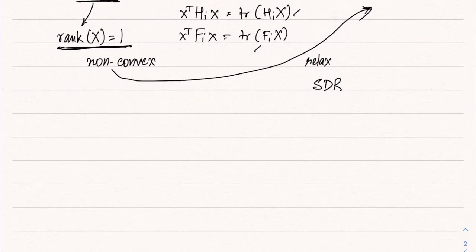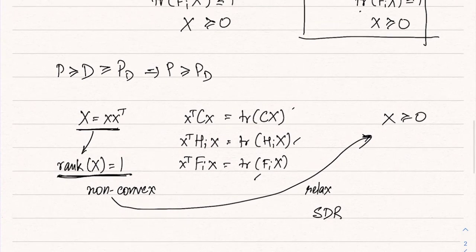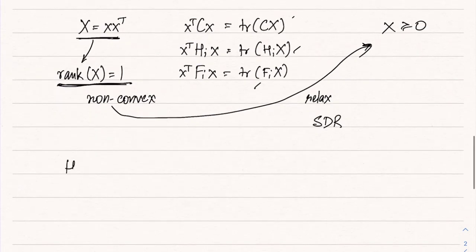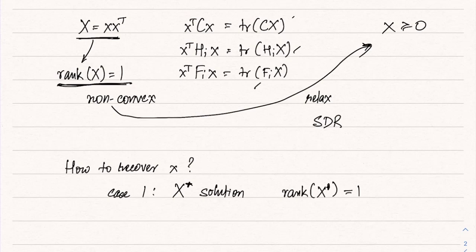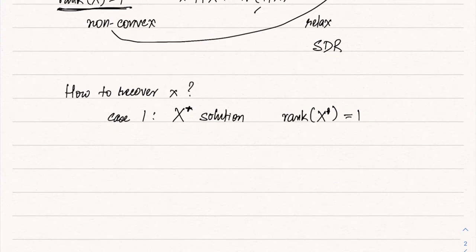After solving the relaxed problem we obtain capital X, but a major issue remains: how do we recover small x? There are two cases. Case 1: suppose X* is the solution and rank(X*) = 1.